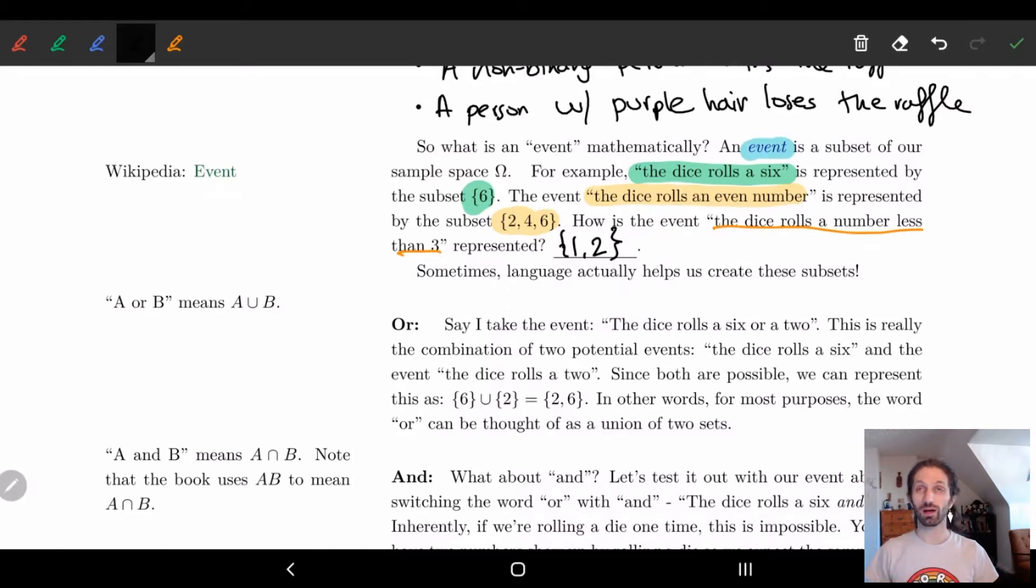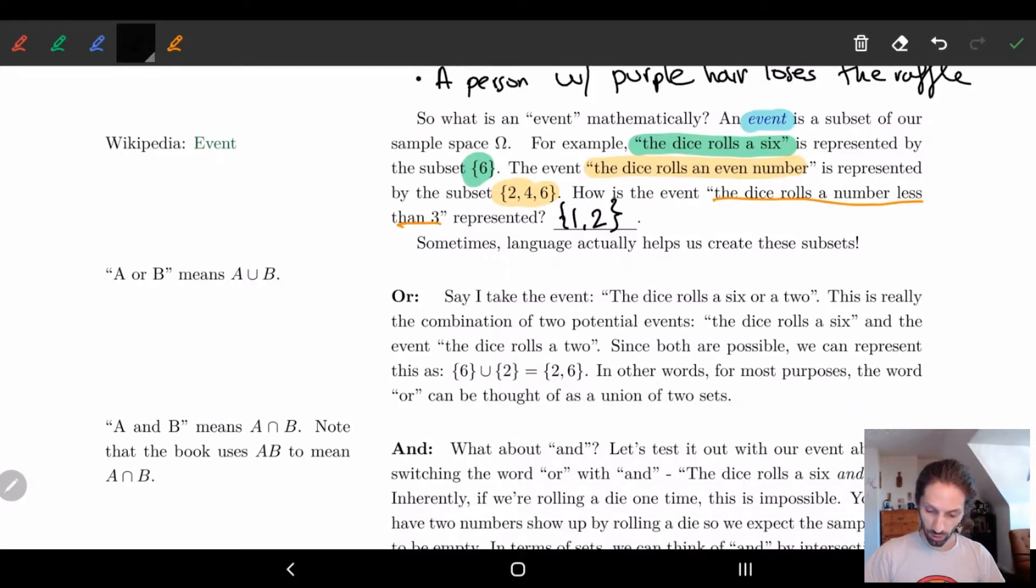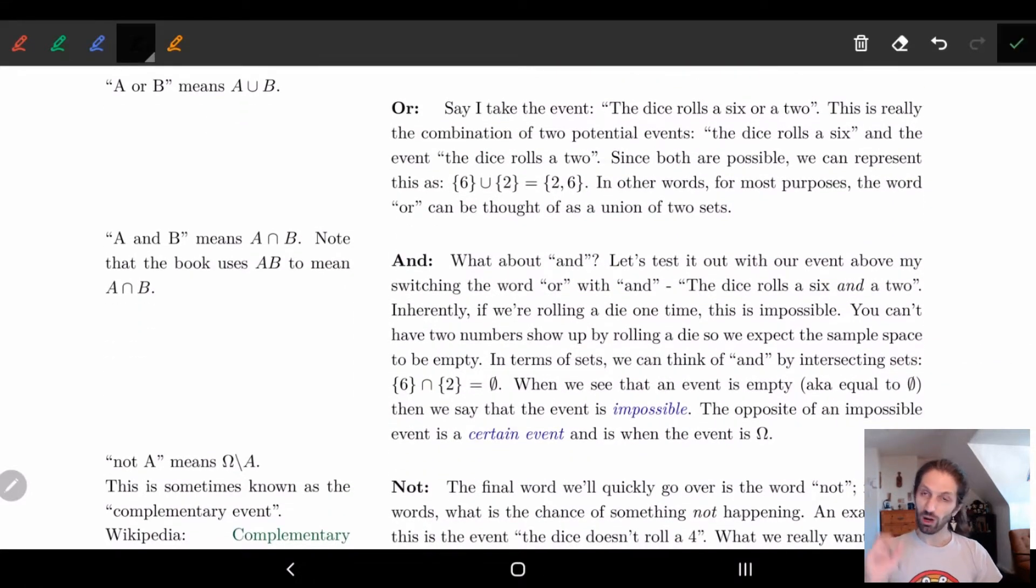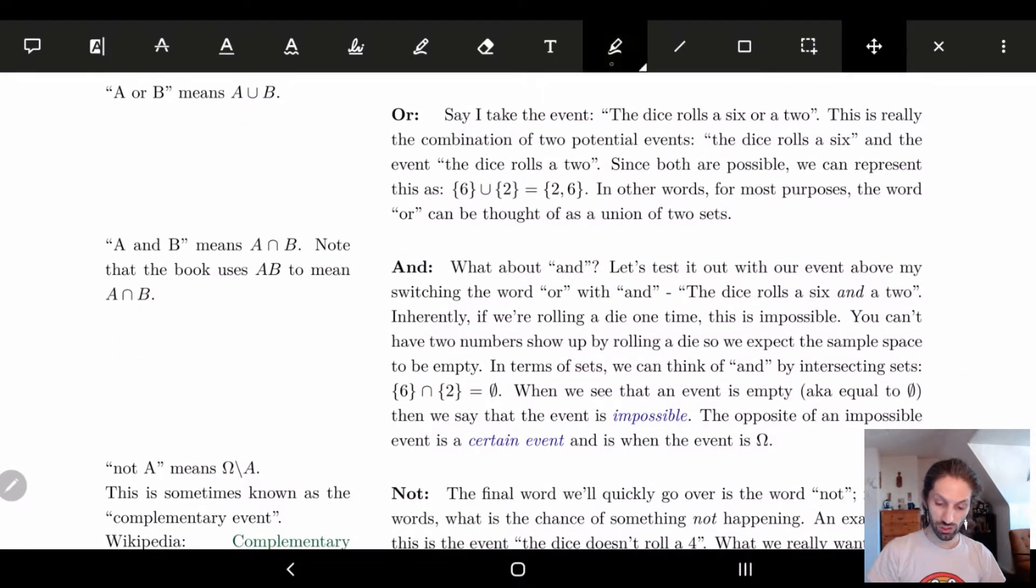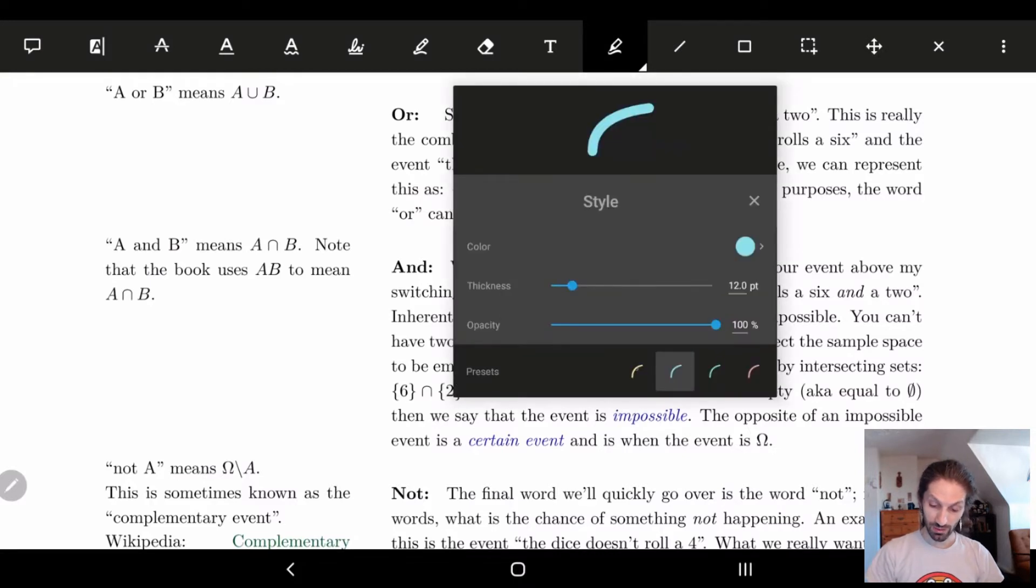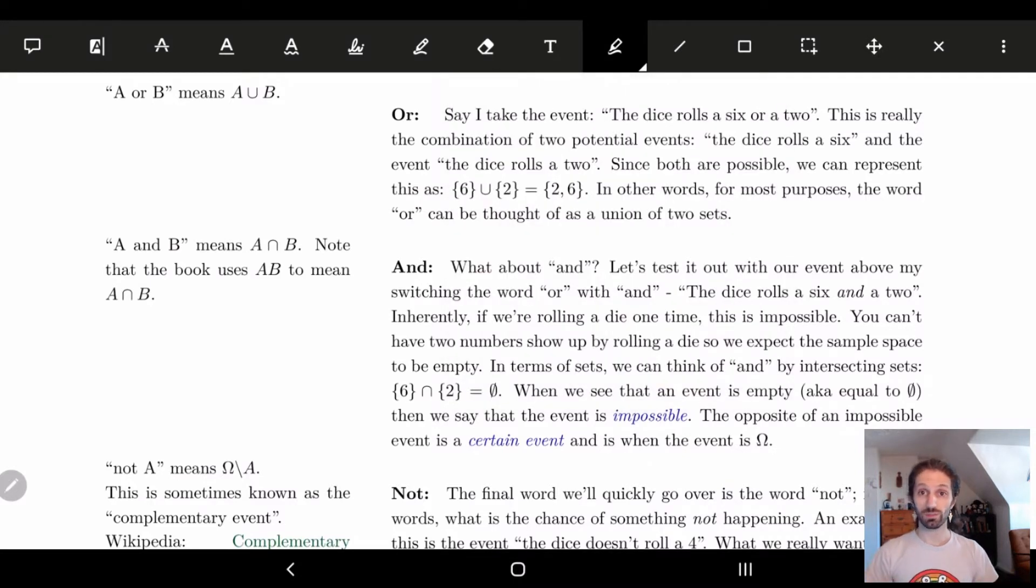So that basically allows us to talk about events as some mathematical object. And the thing is, notice how a lot of probability we're talking about, we're using words, like this happens, that happens. We're using our language. And actually language helps us create subsets a lot of the time. So we're going to go through three different words, things that are marker points for when you should be thinking, oh, I need to be doing a certain thing when it comes to sets.